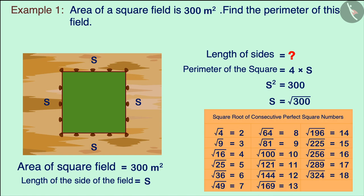Think of perfect square numbers which are less than 300 and more than 300. Look at the two perfect square numbers which have 300 between them. We observe that 300 falls between 289 and 324.